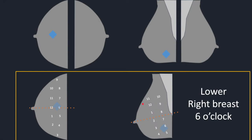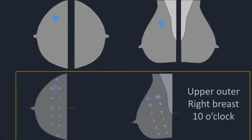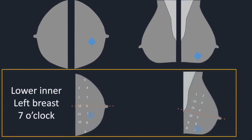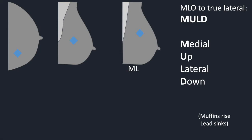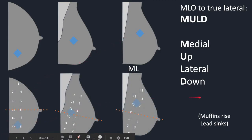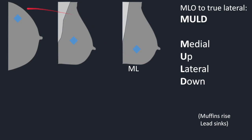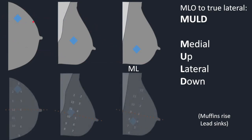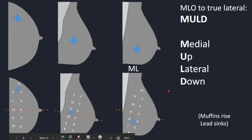Here is the corresponding example at 6 o'clock. I want to demonstrate how a lesion will appear differently from an MLO and an ML view. If the lesion is medial, it will appear to go up relative to the posterior nipple line. There is a somewhat confusing mnemonic — muffins rise and lead sinks — meaning medial things will go up and lateral things will go down. I just remember MOLD: medial up and lateral down. Here is another example of the opposite, with a lateral lesion apparently going down when moving from the MLO to the ML view.